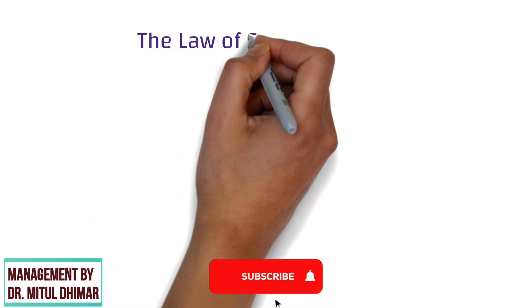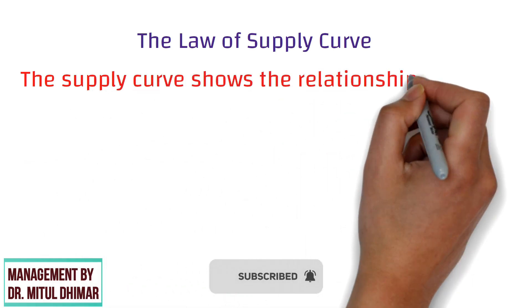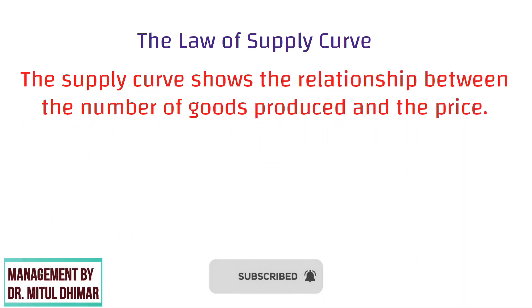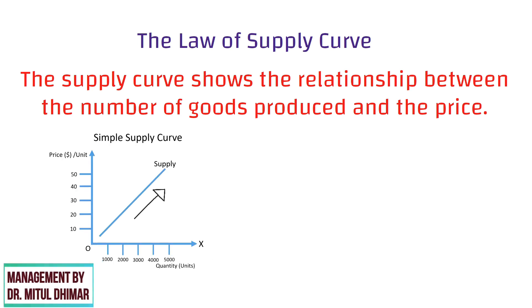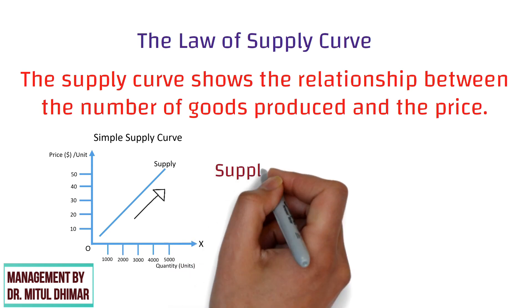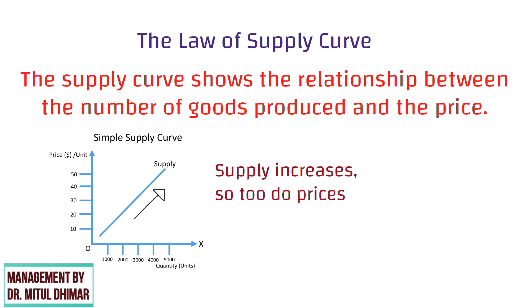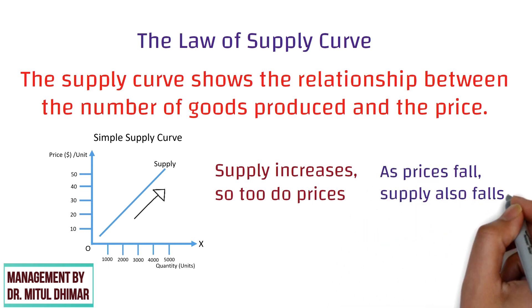The law of supply curve: the supply curve shows the relationship between the number of goods produced and the price. As we can see from the graph, the line goes from the bottom left towards the top right. This demonstrates that as supply increases, so too do prices. Similarly, as price falls, supply also falls.